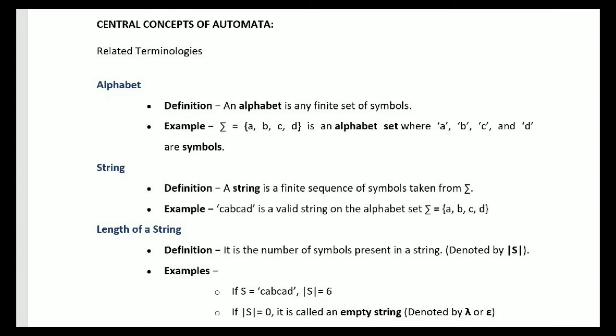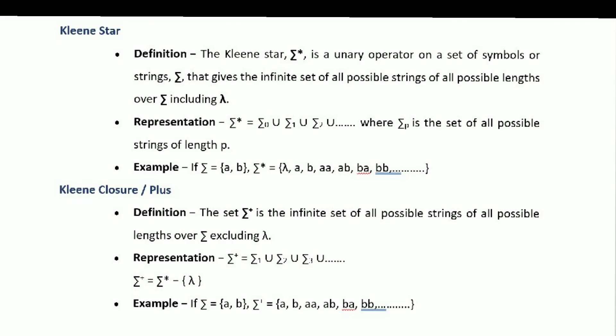If a string has zero length, it is called an empty string. Since there is nothing in it, we denote it with lambda or epsilon. Next, Kleene closure — Kleene star means taking all possible words from a language, including the empty string, and combining them into a set. So Kleene star includes the empty string (denoted lambda) along with all strings formed from the symbols of the language.